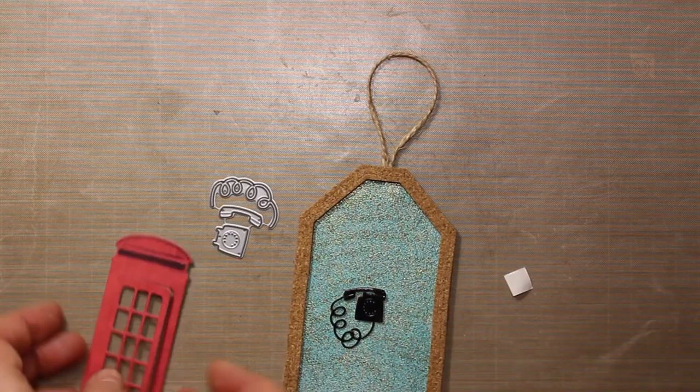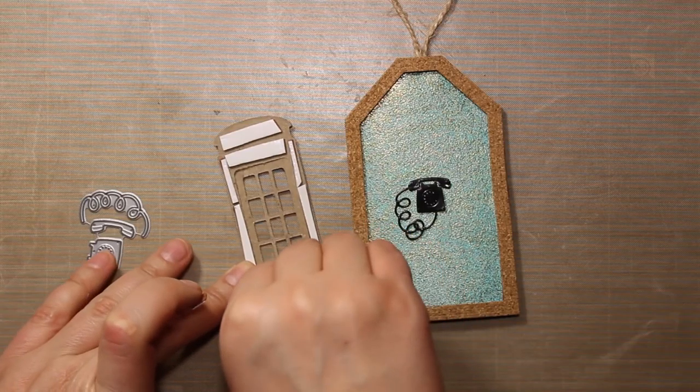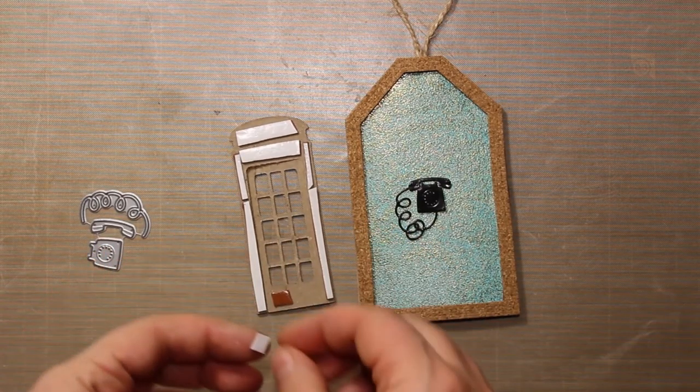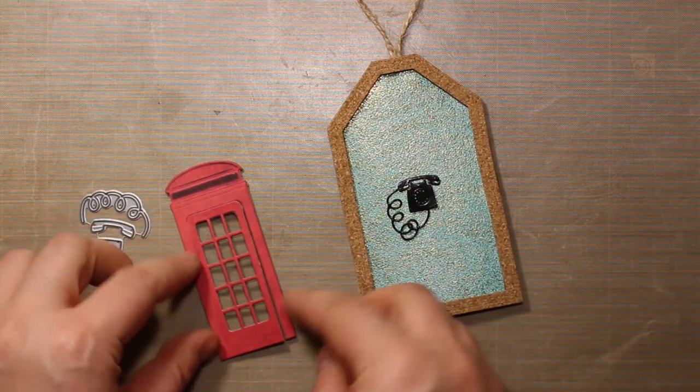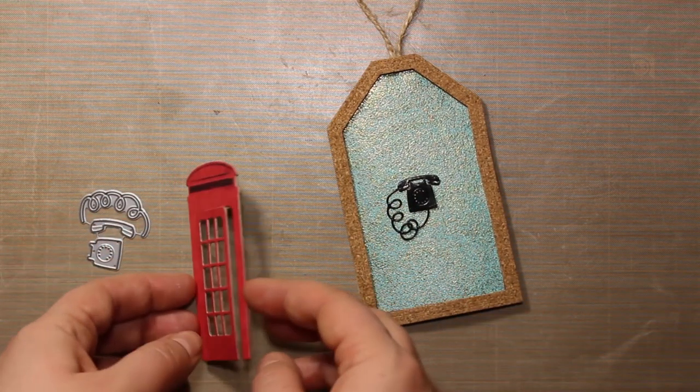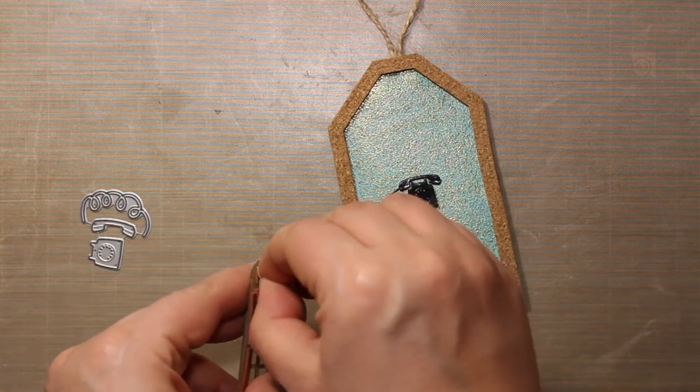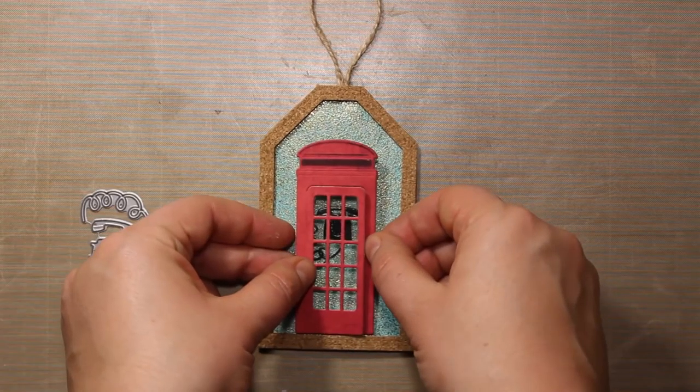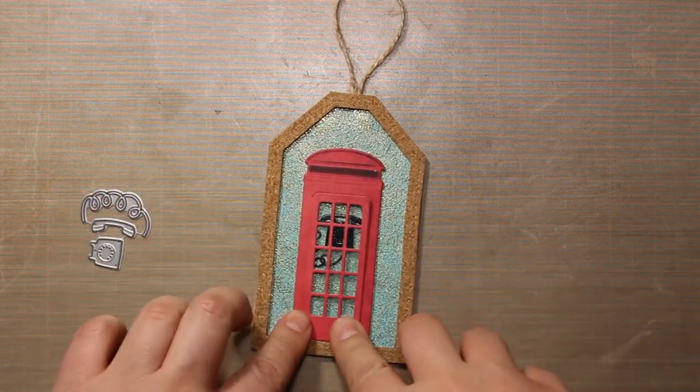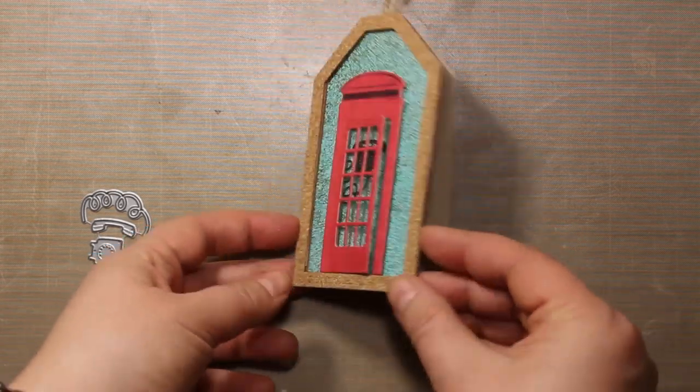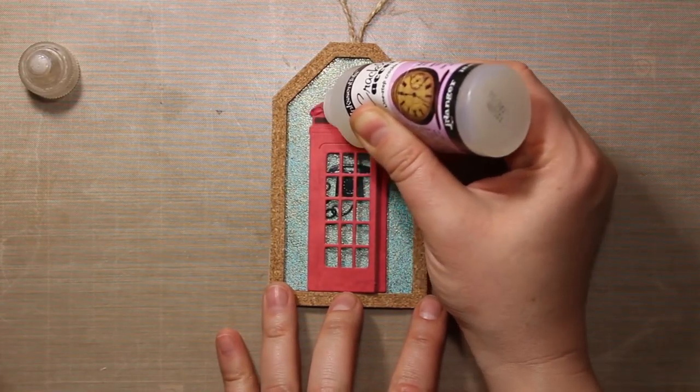I am attaching a foam square at the wrong side of the phone and now I'm finding the right position and sticking it down onto my background. As for the phone booth, I have added one layer of foam tape at the wrong side of it and I'm adding three layers of foam to the door to keep it slightly open. Then I'm peeling off the liner and attaching the phone booth to the tag right on top of the phone.